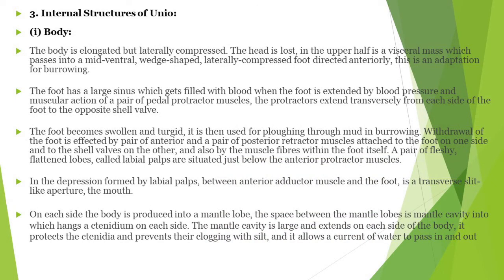Internal structure of Unio — Body: the body is elongated but laterally compressed. The head is lost; the upper half is a visceral mass which passes into a mid-ventral, wedge-shaped, laterally compressed foot directed anteriorly — this is an adaptation for burrowing. The foot has a large sinus which gets filled with blood when the foot is extended by blood pressure and muscular action of the pair of pedal protractor muscles. The protractor extends transversely from each side of the foot to the opposite shell valve. The foot becomes swollen and turgid, and is then used for ploughing through the mud and burrowing. Withdrawal of the foot is effected by a pair of anterior and a pair of posterior retractor muscles.